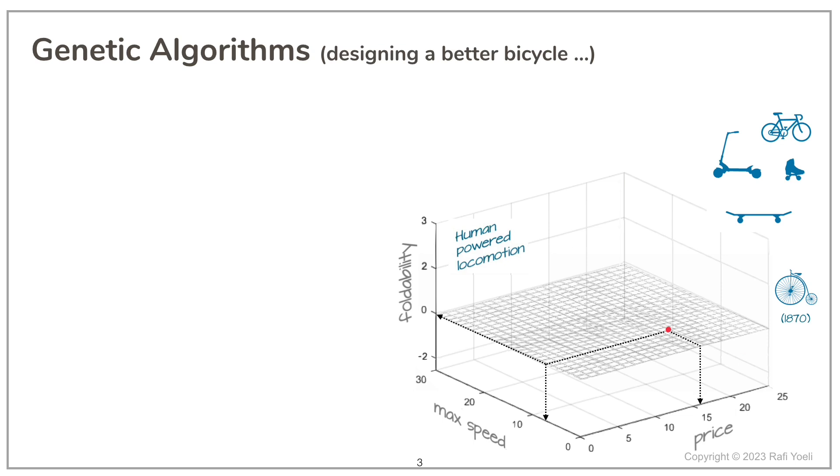Imagine now that Eugène Meyer had a small computer, and that genetic algorithms had already been invented when he first started thinking about his bicycle. Using genetic algorithms, this is the methodology that Eugène Meyer would have followed.